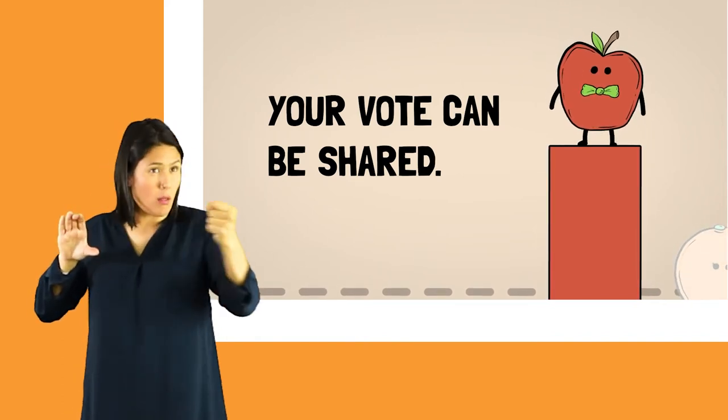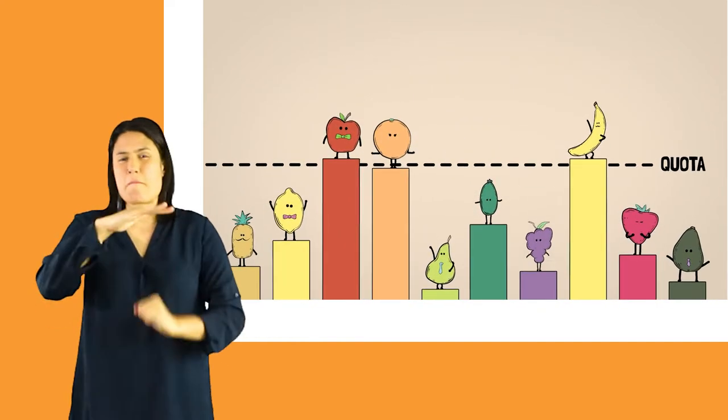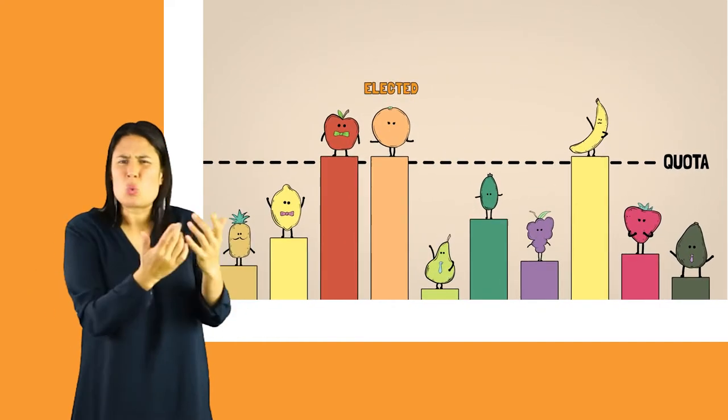So, because apple has received more votes than the quota and is now elected, part of your vote goes to your second choice, orange, which helps orange get elected.